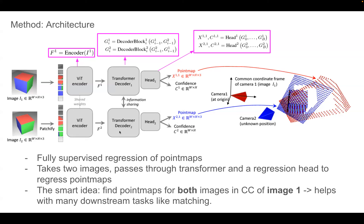The architecture is a transformer based on a previously introduced paper. It takes the two images, encodes them into features one and two, and then a decoder uses cross-attention between the features of the first and second image through its blocks, producing representations G that are concatenated and given to a regression head that predicts the point maps. It also predicts a confidence map. The output is two point maps in the camera coordinates of the first camera, giving for each pixel its 3D location.